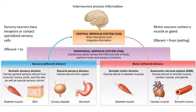Before we go on, I'll briefly review the relationship between the central nervous system and the rest of the nervous system. The nervous system as a whole can be divided into the central and the peripheral nervous systems. The central nervous system is the brain and spinal cord. The peripheral nervous system includes all the nerves running to and from the central nervous system, and is further divided into the sensory division and the motor division. Sensory information comes from sensory receptors and goes into the central nervous system along nerves.